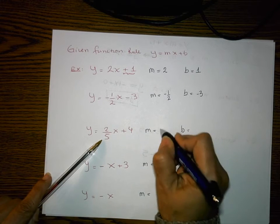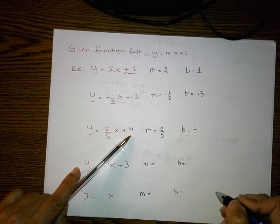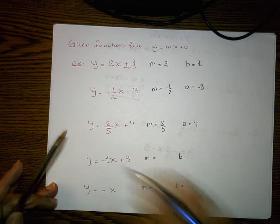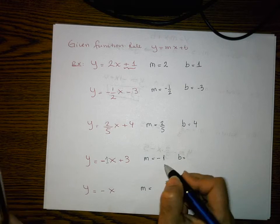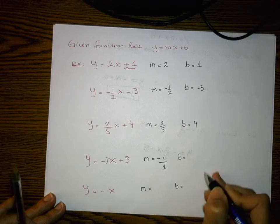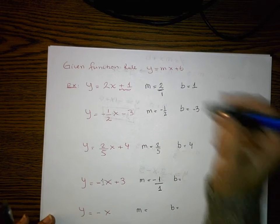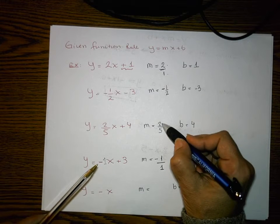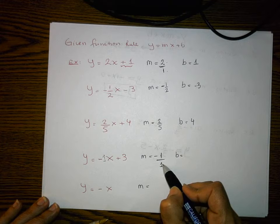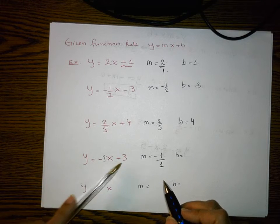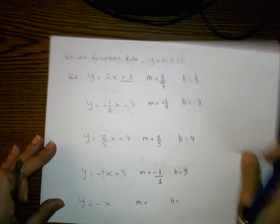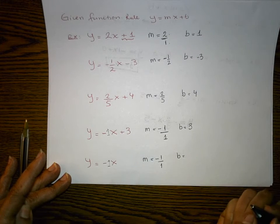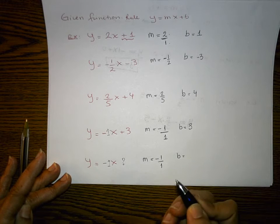Here the slope is two-fifths and the y-intercept is four. In the next one, there's an invisible number one in front of the negative, so the slope is negative one, which some students write as negative one over one to see the rise over run. The y-intercept is three. The last one also has an invisible negative one as the slope, and the y-intercept is zero since nothing is being added or subtracted.